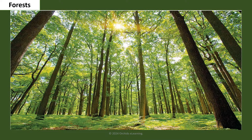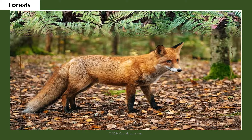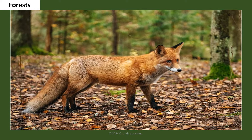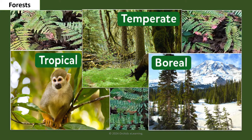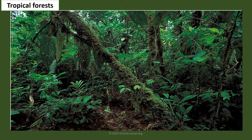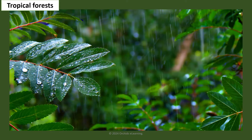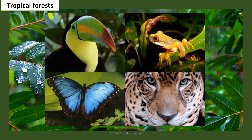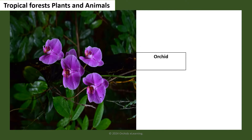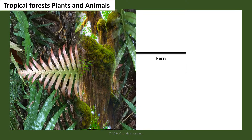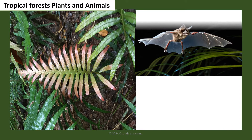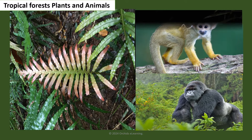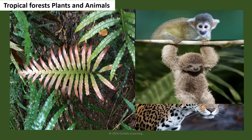Forests are large areas covered with plants. Different types of plants and animals are found in forests. There are three major types of forests on earth: tropical, temperate, and boreal. Tropical forests, also known as rainforests, are found between the equator and the two tropics. These regions receive heavy rainfall throughout the year. Plants such as orchids, vines, moss, and ferns, and animals like bats, gorillas, monkeys, jaguars, sloths, and macaws are found here.